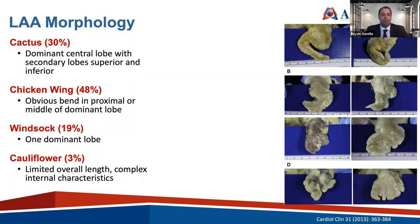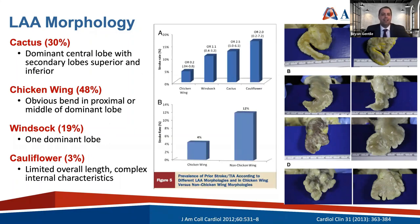Fellows often ask whether morphology really matters. There's some data on this — a study from the early 2010s looked at TEE morphology grouped by patients who had had a prior stroke or thromboembolic event. It found that patients with a non-chicken wing morphology were more likely to have had a thromboembolic event in the past. It doesn't prove causality, but it's something interesting to note.